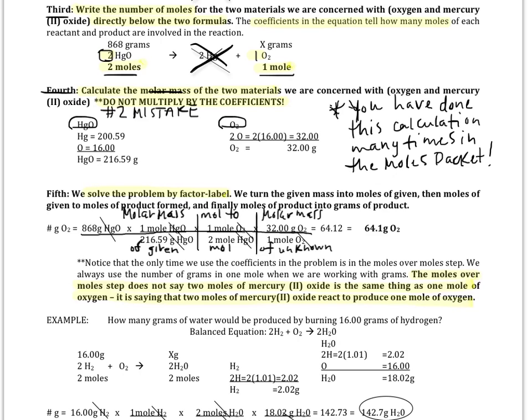You have done this calculation many times before in the moles packet. You look up the weight of mercury on the periodic table. You look up the weight of oxygen on the periodic table. You add them together. For oxygen, because there are 2 O's, you multiply the weight of oxygen by 2.